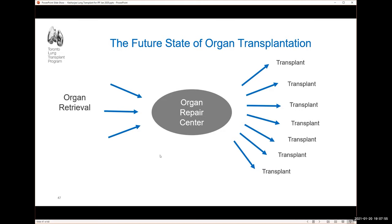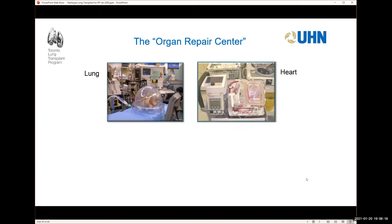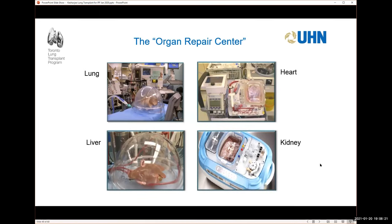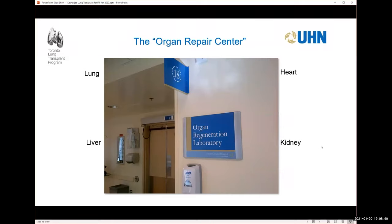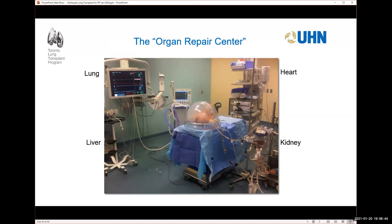I think the future of transplantation will be organ repair centers. The way transplantation runs right now is really much of a cottage industry where every hospital does their own thing. The future will be organs come into a repair center, they're optimized for the patient, and then transported out to specific patients that need it. We already have the first organ repair center in the world, established in 2008, where we do ex vivo lung perfusion. OR18 and OR11 are the organ regeneration laboratories at Toronto General Hospital — there's the lung like a patient on the table, the ventilator, the perfusion pump, and a monitor.